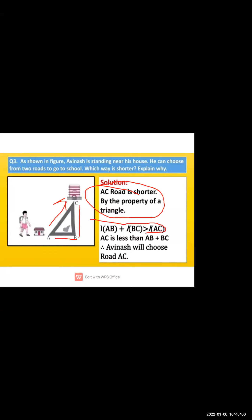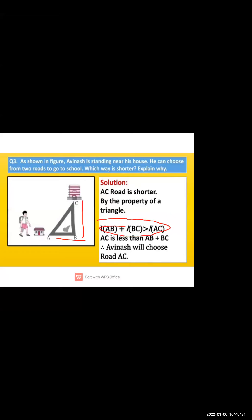According to the property of a triangle: length AB plus BC is greater than length AC. First he crosses AB, then BC, so AB + BC is the total longer distance. Therefore AC is less than AB + BC, and Abhinash will choose road AC.